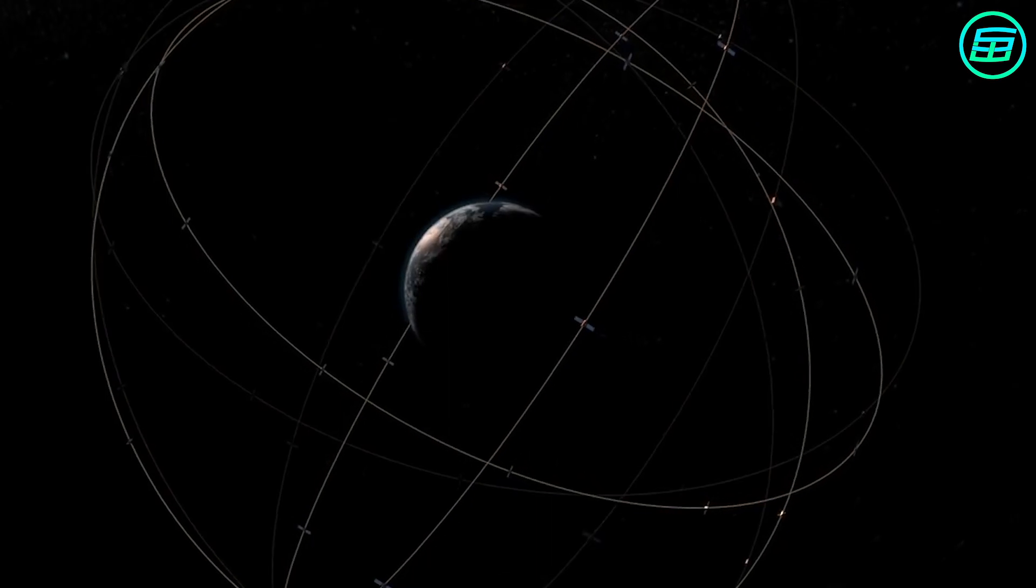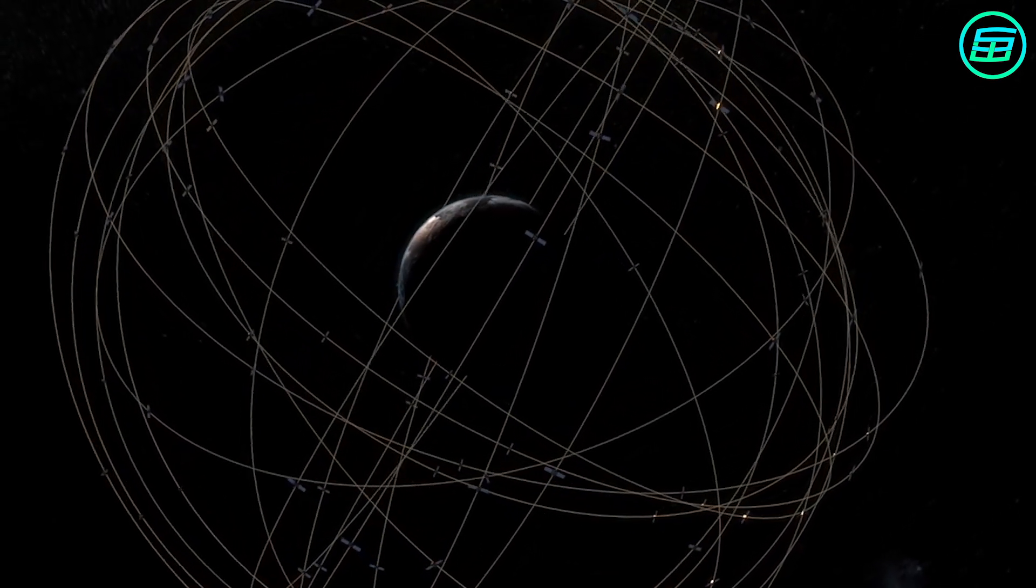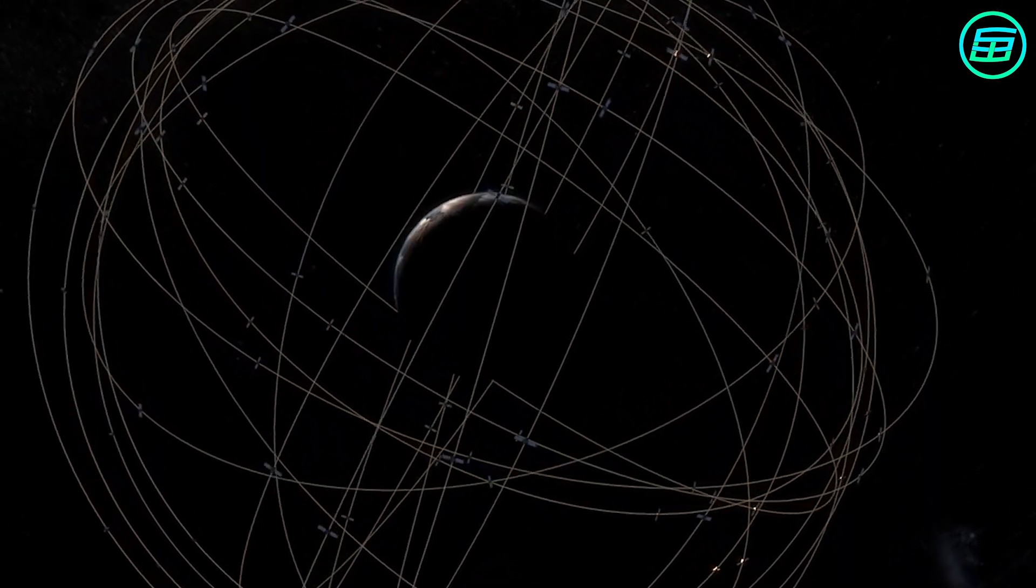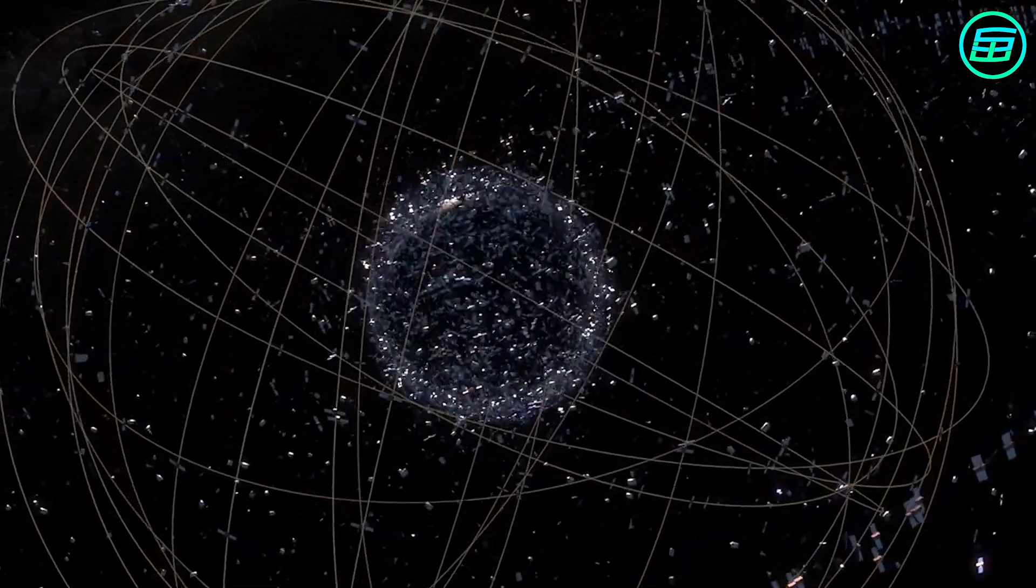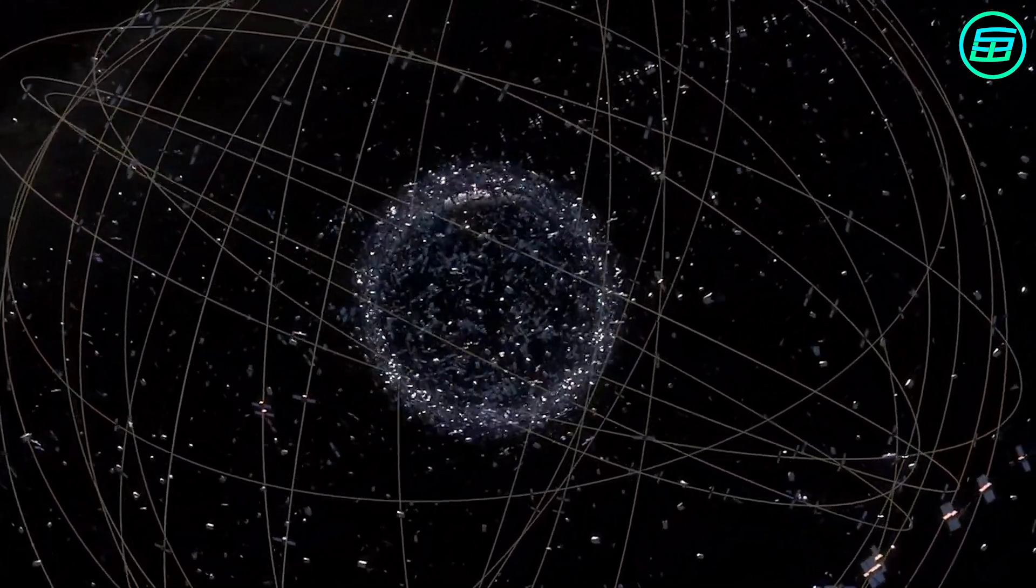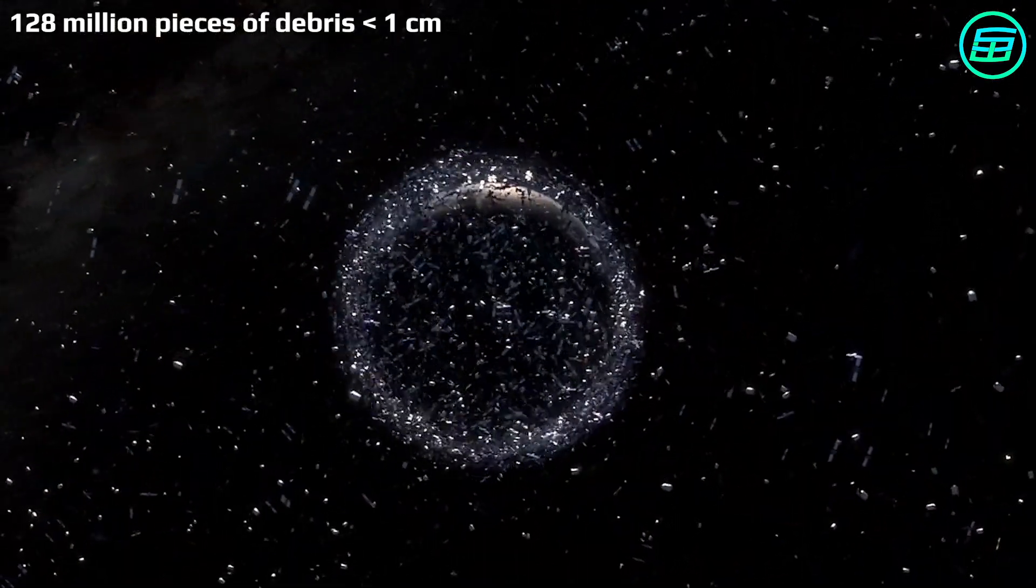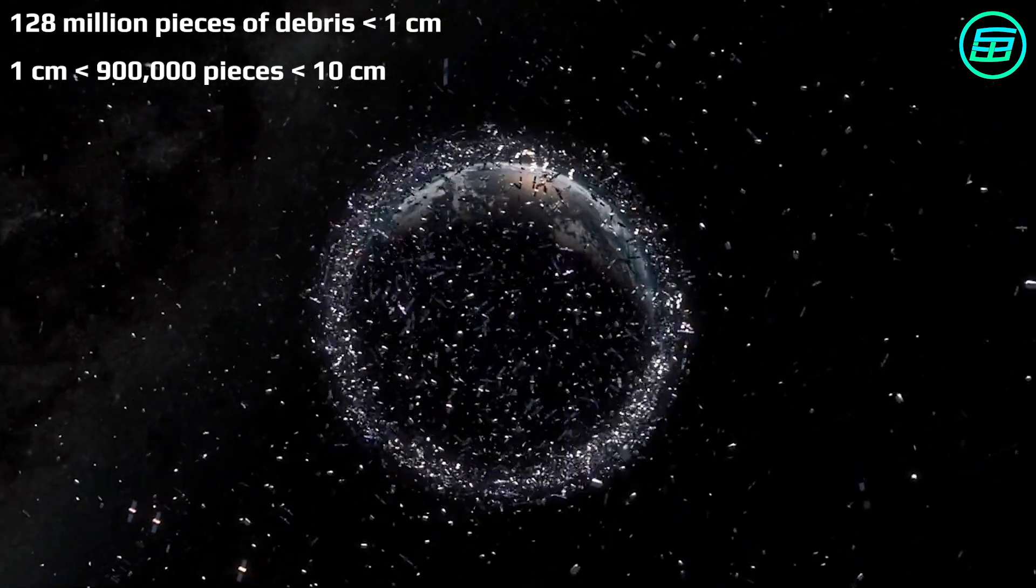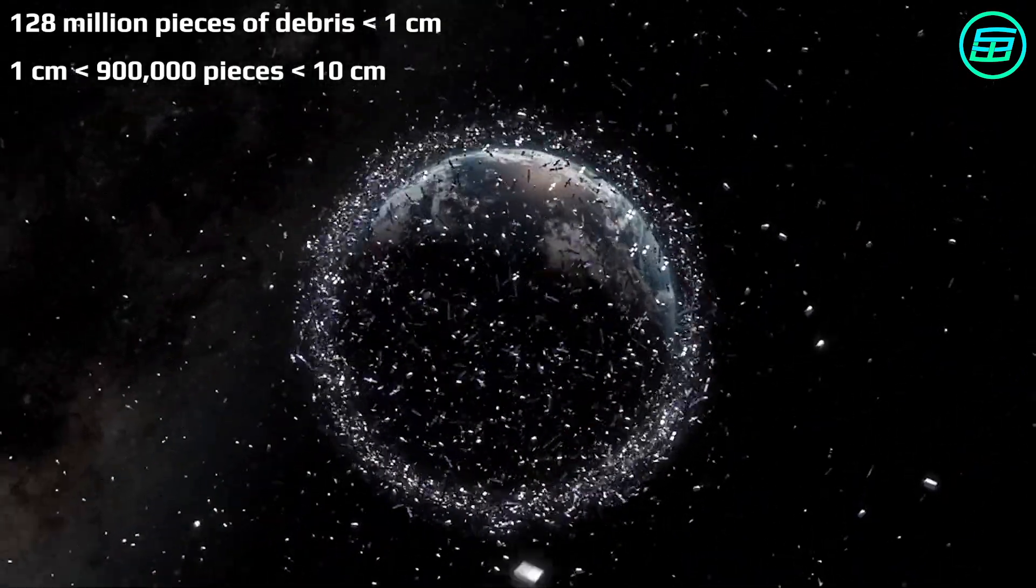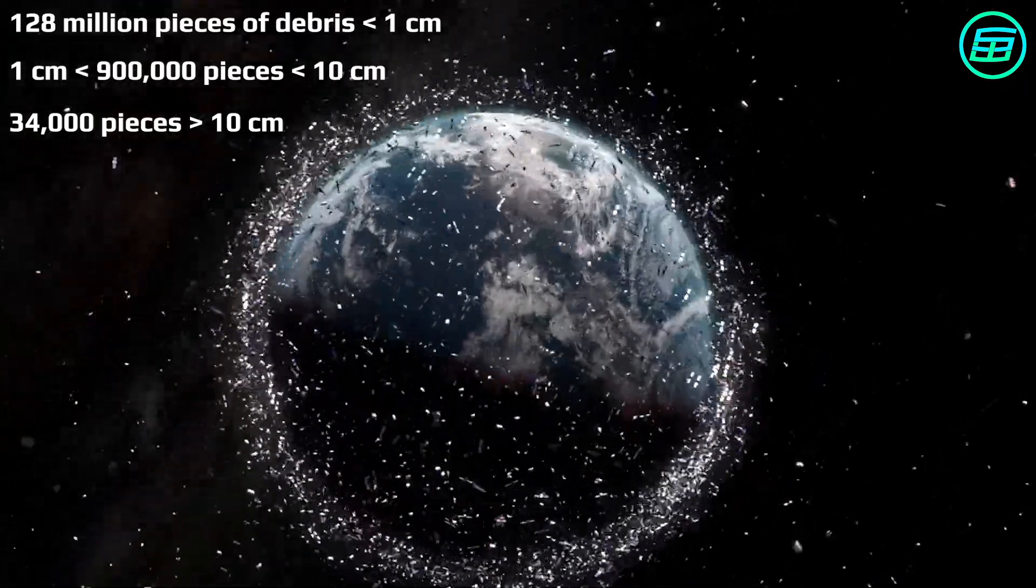In 2019, the US Space Surveillance Network reported about 20,000 artificial objects in Earth orbit, including satellites. However, these are just the objects large enough to be tracked. According to estimates, there are more than 128 million pieces of debris smaller than one centimeter, about 900,000 pieces between 1 and 10 centimeters, and around 34,000 pieces larger than 10 centimeters.